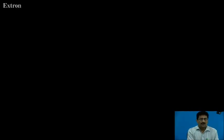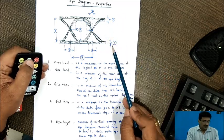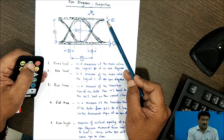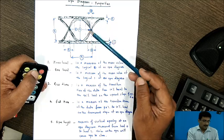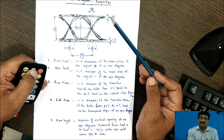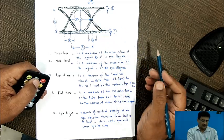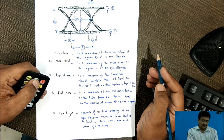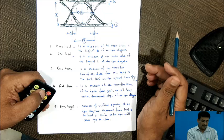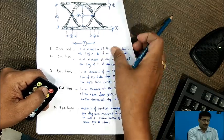Eye patterns provide a practical and very convenient method assessing the extent of ISI degradation. So here, if you want to see the different properties of the I diagram, here in this figure there are different numbers have been shown. So this is the zero level. It is a measure of the mean value of the logical zero of an eye diagram. This is one level is a measure of the mean value of the logical one of an eye diagram. Rise time that is what is shown. This is the rise time. It is a measure of the transmission time of the data from 10% level to 90% level on the upward slope of an eye diagram. Fall time that has been shown. This is a fall time is a measure of the transition time of the data from 90% to 10% level on the downward slope of an eye diagram. This is the height, eye height. It is a measure of vertical opening of an eye diagram measured from level 0 to level 1. Noise on the eye will cause eye to close.